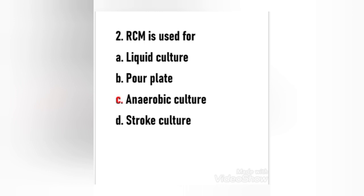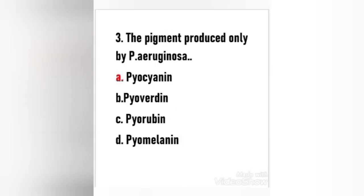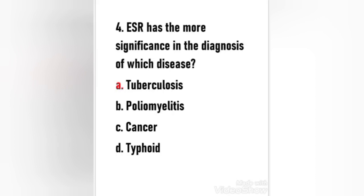Next question: The pigment produced only by Pseudomonas aeruginosa — (a) pyocyanin, (b) pyoverdine, (c) pyorubin, (d) pyomelanin. The right answer is option A — pyocyanin. The pigment produced only by Pseudomonas aeruginosa is pyocyanin. It is a blue-green phenazine pigment produced in large quantities by active cultures of Pseudomonas aeruginosa.